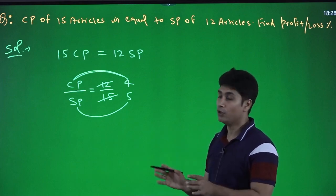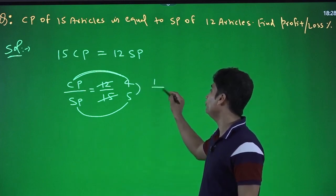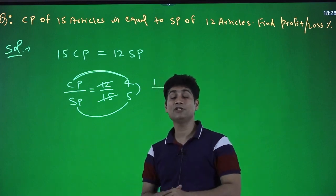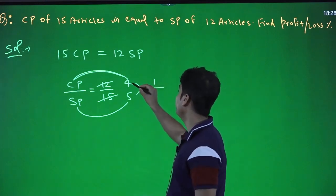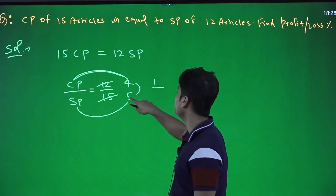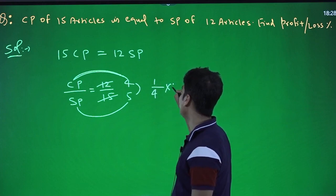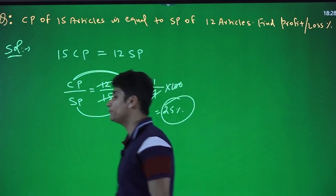A profit of 1 unit is made. Profit is calculated on cost price: selling price minus cost price equals 1 unit profit. This 1 unit profit is calculated on 4 units (CP), so multiply by 100 to get 25% profit.